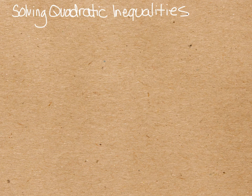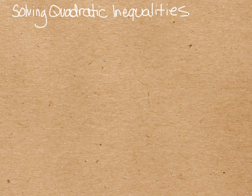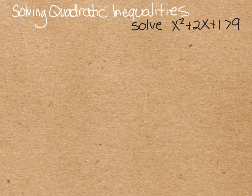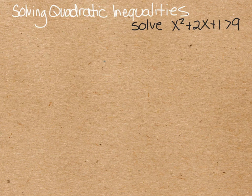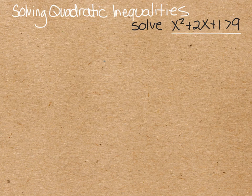All right, so that was graphing. Now we're going to do solving quadratic inequalities. And I'm going to explain this with an example. So we want to solve the inequality x squared plus 2x plus 1 is greater than 9. So when you're graphing an inequality, you're just drawing it and shading. When we're solving, we're actually going to figure out what x values make this statement true.